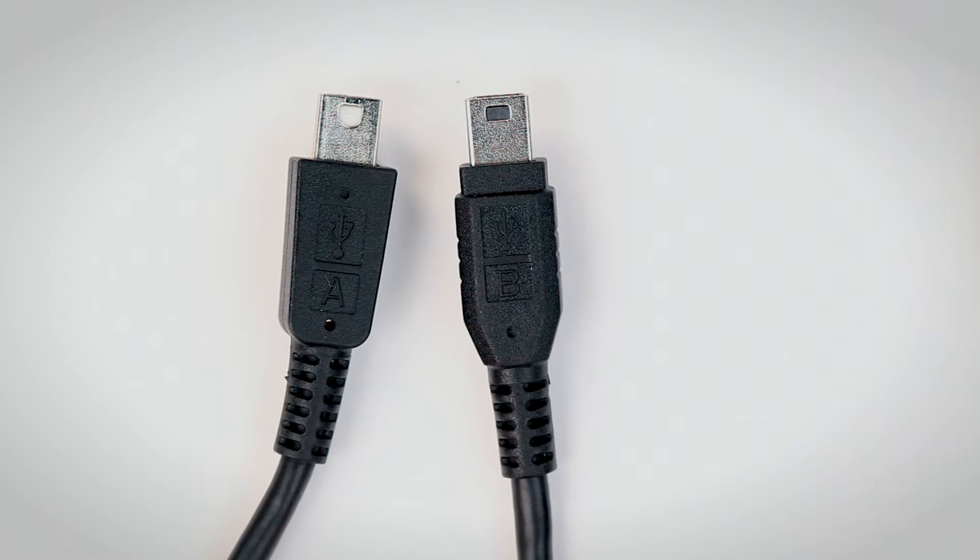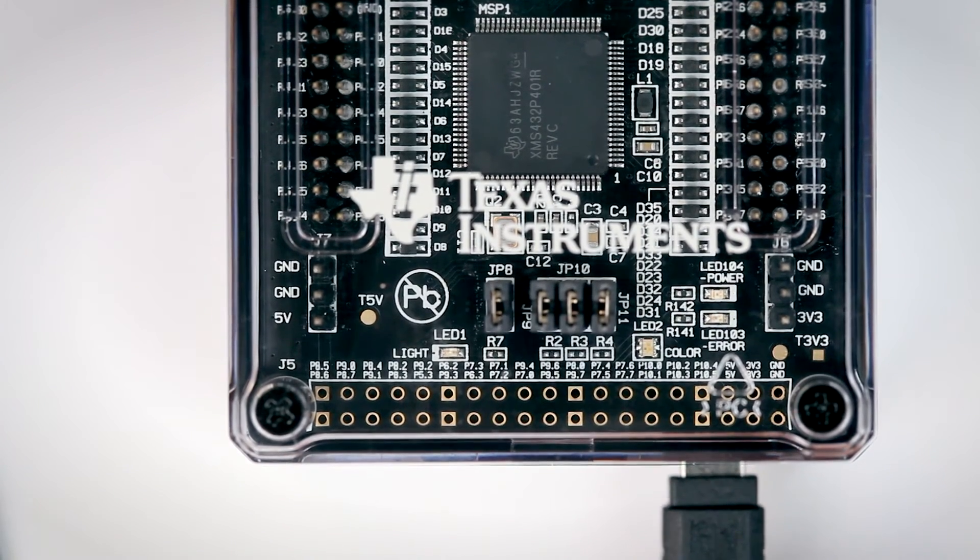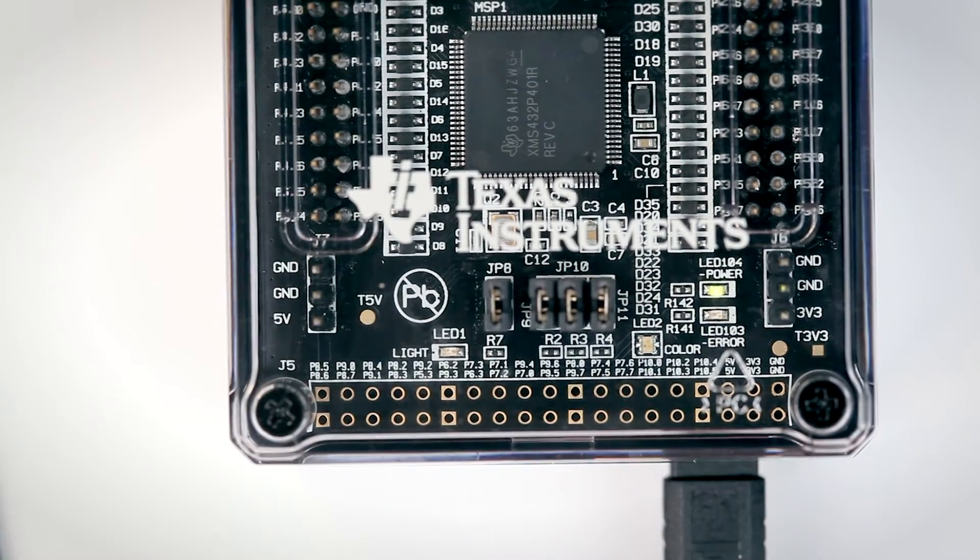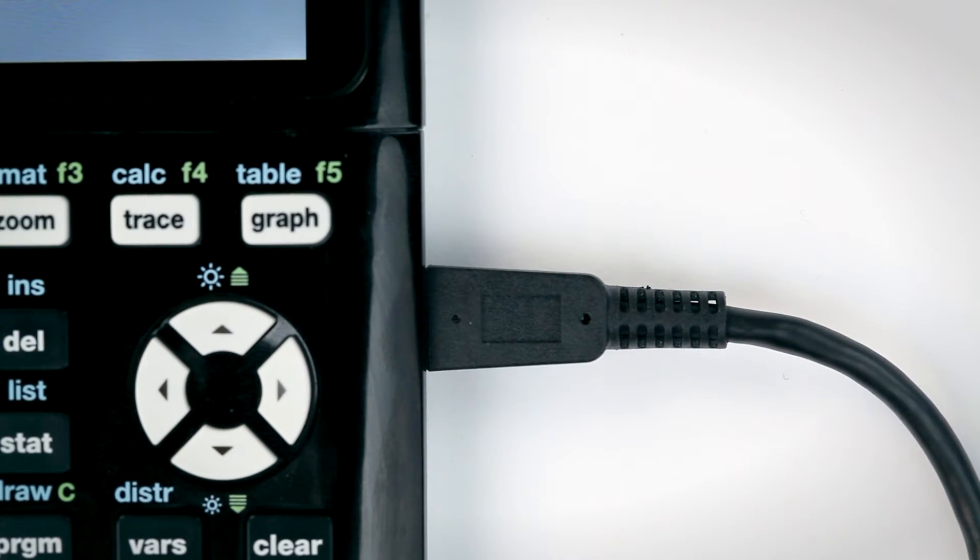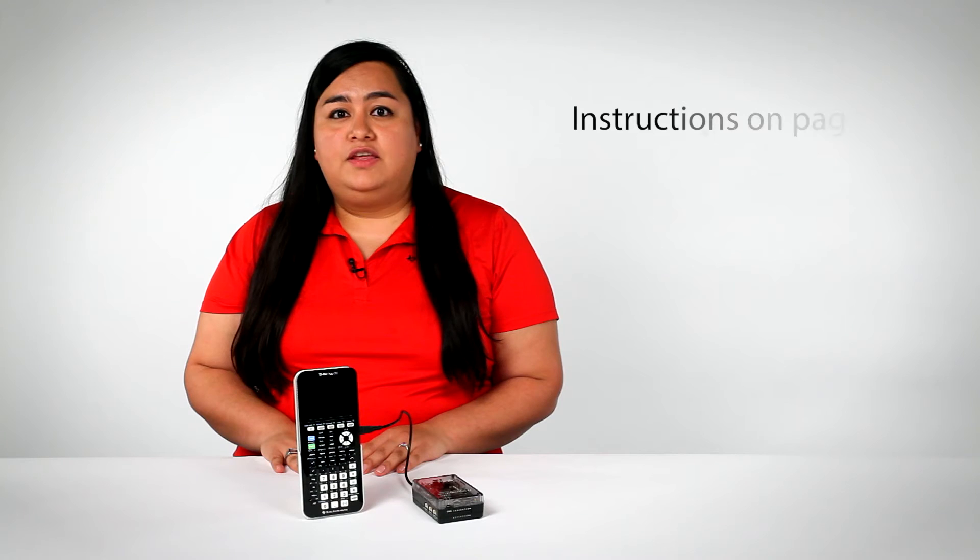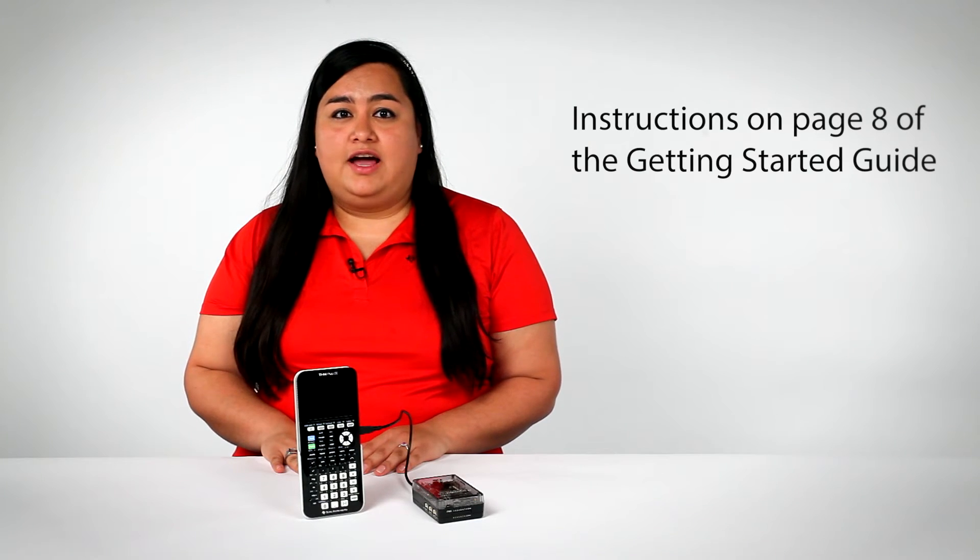When your calculator is ready, use the Mini A to Mini B USB cable that comes with the TI Innovator Hub to connect the devices. Insert the connector labeled B into the TI Innovator Hub and the A connector into the calculator. The instructions are on page 8 of the Getting Started Guide.